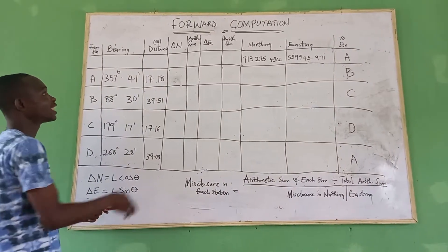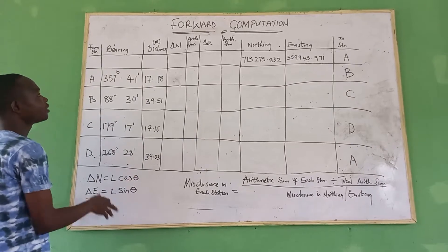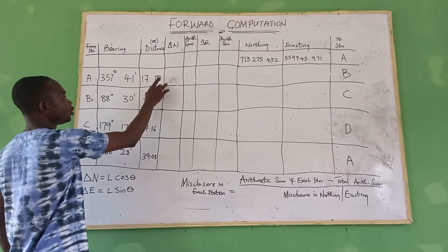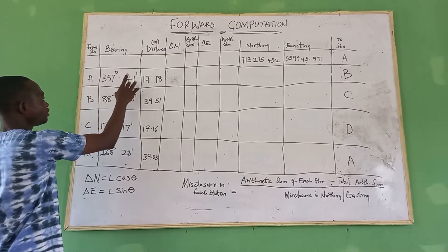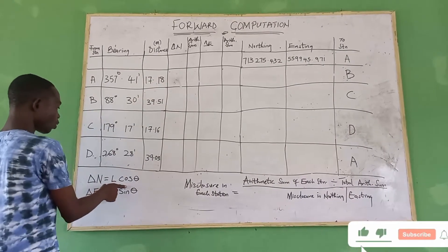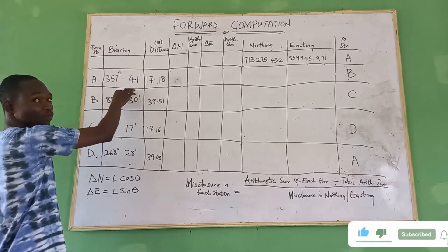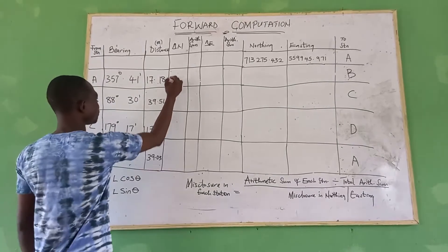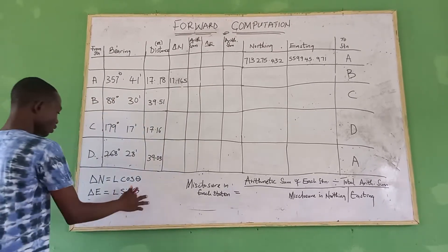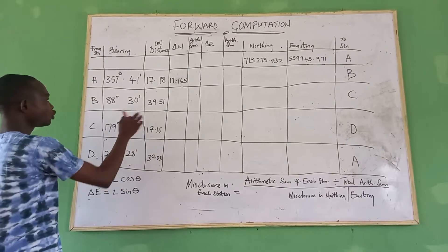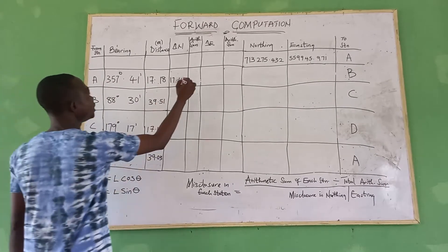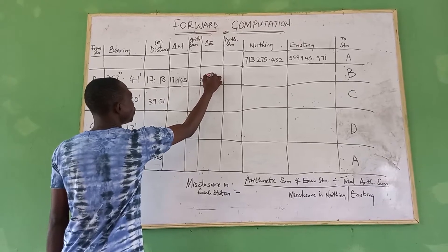In order for us to calculate delta northing and delta easting, we use the formula: delta northing equals L·cosθ. So we have distance as 17.18 while the bearing is 357 degrees 41 minutes. So using this formula, we have 17.18 × cos(357° 41'), which gives us 17.165. Then to calculate delta easting, we have the formula L·sinθ. So it is 17.18 × sin(357° 41'), which gives us minus 0.694.